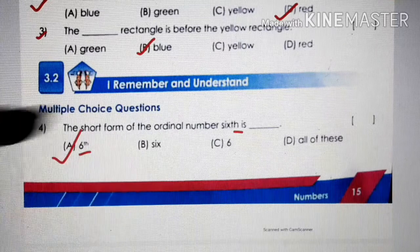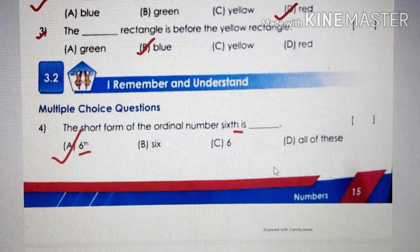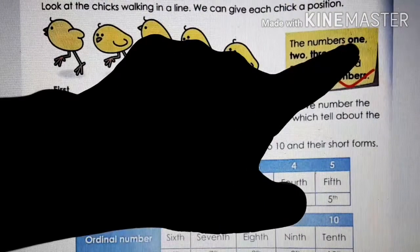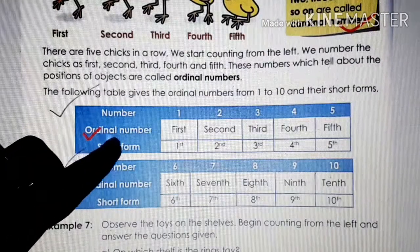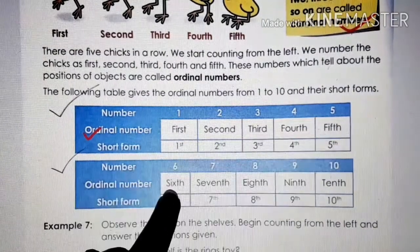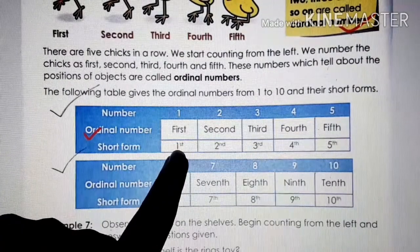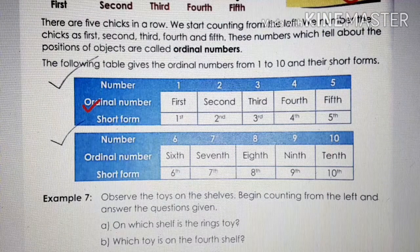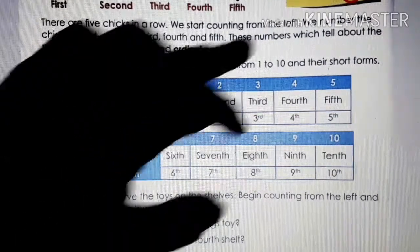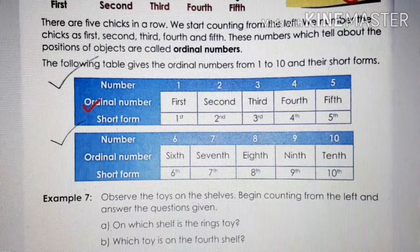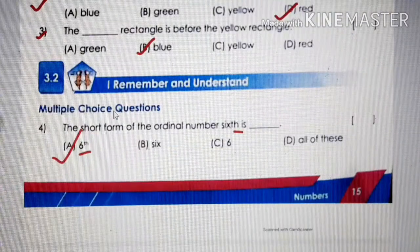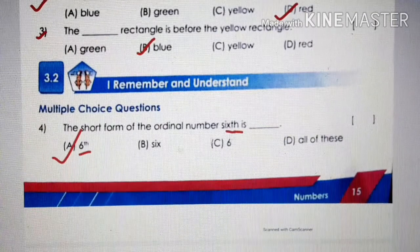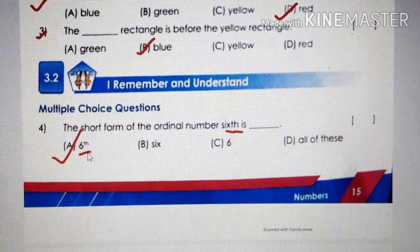Number four: the short form of the ordinal number sixth. We studied ordinal and cardinal numbers in our previous class. Cardinal numbers are normal 1, 2, 3. Ordinal numbers are first, second, third, fourth, fifth, sixth, seventh, eighth, ninth, and tenth. Their short forms: first is 1st — you write the last two letters of the word. The short form of sixth is 6 with T-H, so option A is the correct answer.